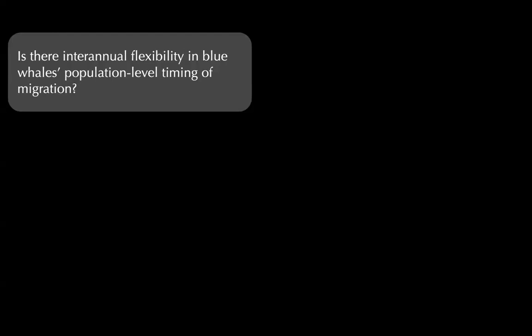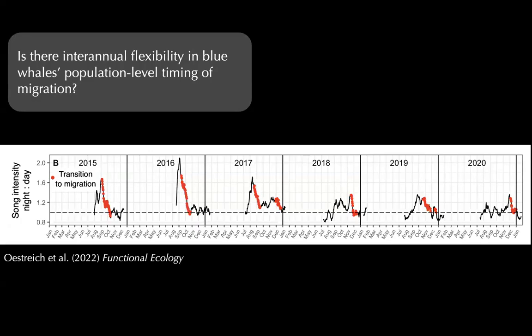A really natural follow-up question, now that we can identify the timing of migration acoustically, is to explore interannual variability in the timing of migration — asking whether there's any interannual flexibility in blue whales' population timing of migration. Expanding the data out to an interannual time series and showing the night-to-day ratio with red dots indicating statistically significant decreases — indicative of the population transitioning to the migratory behavioral state — we see a lot of variability year to year. For example, in 2015 migration happened pretty early in the fall; in 2020, migration happened in December and January; and in 2017, we think we're hearing multiple waves of migration within the population.